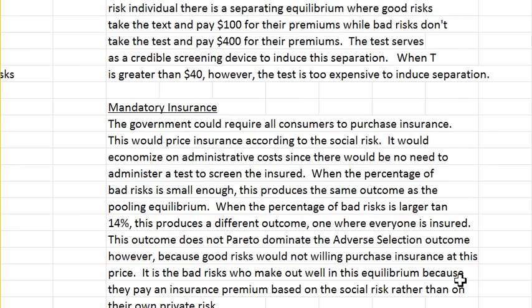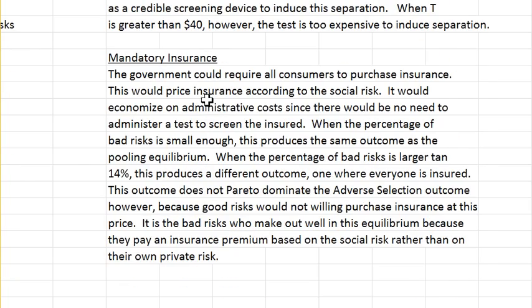Another possibility is a government mandate where everybody buys insurance. This is coercive when the fraction of bad risks is large enough that the average price of insurance would exceed $140, since good risks otherwise wouldn't buy it. But it has the benefit that you don't incur screening costs and everybody gets insurance.